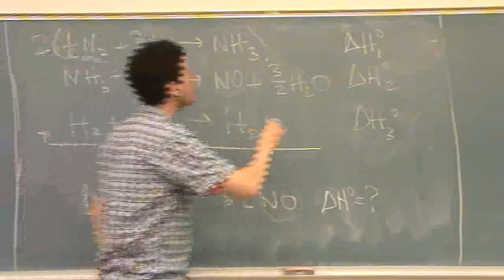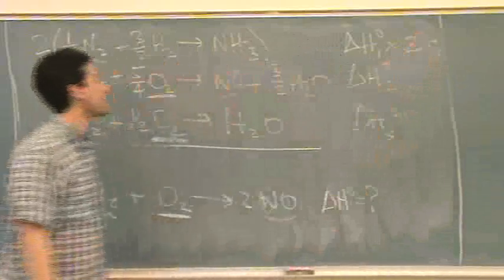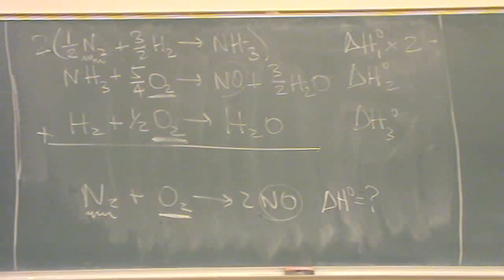Times 2. That means I multiply the delta H times 2. Once I multiply a reaction by something, I don't want to touch it again. So I should not change this again. Unless I find out I've made a gruesome error somewhere.